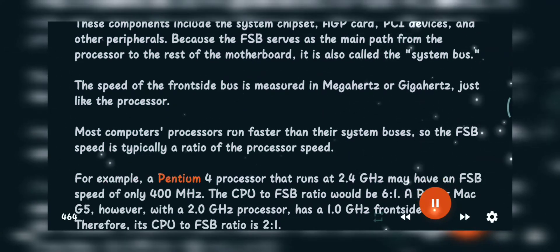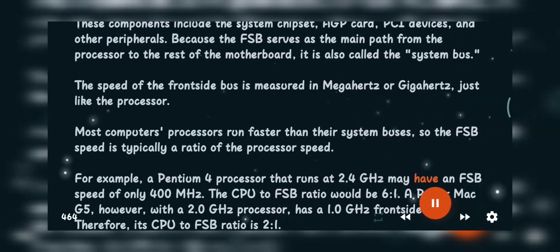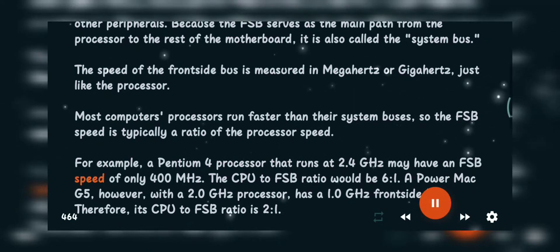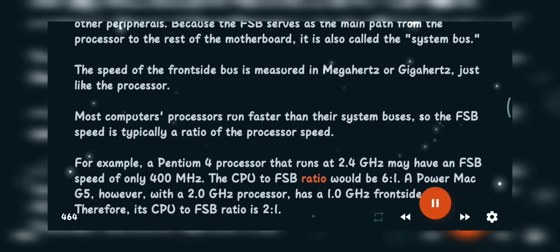For example, a Pentium 4 processor that runs at 2.4 gigahertz may have an FSB speed of only 400 megahertz. The CPU to FSB ratio would be 6:1.